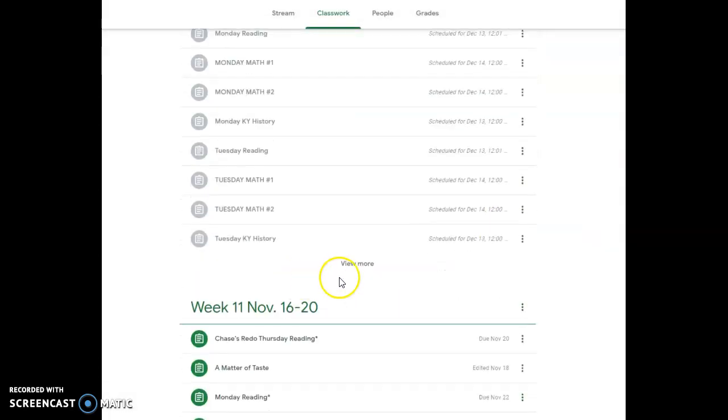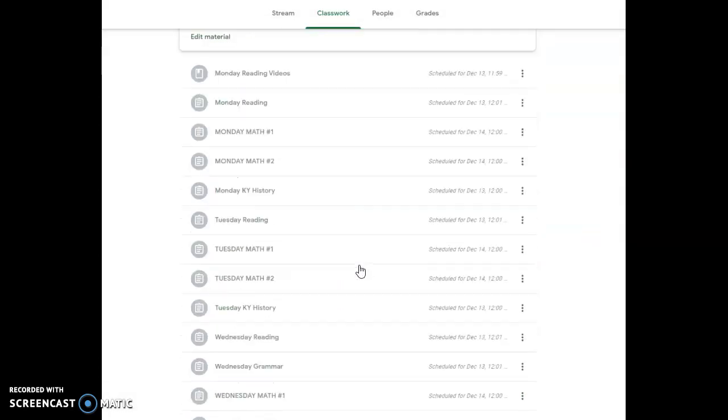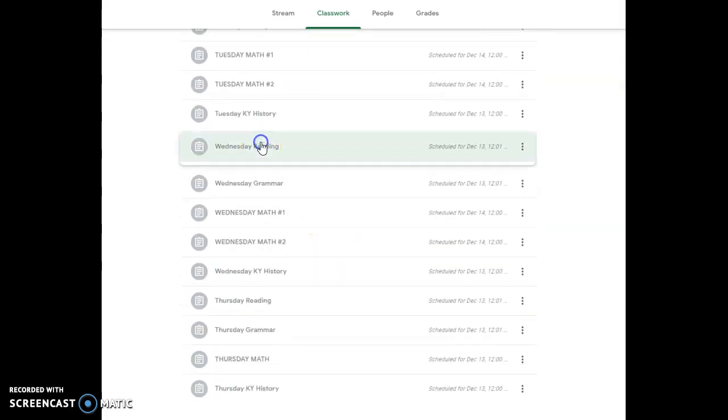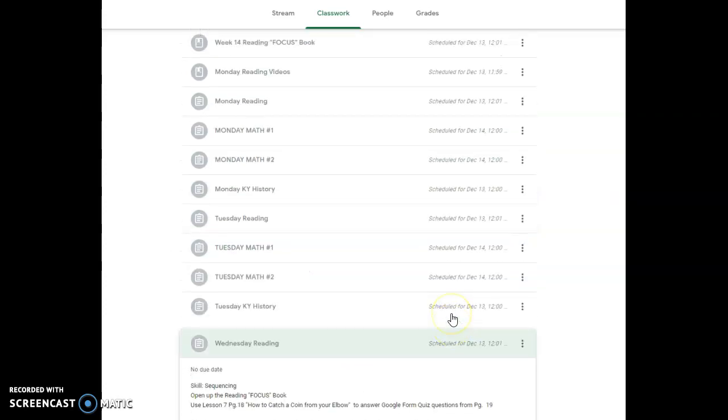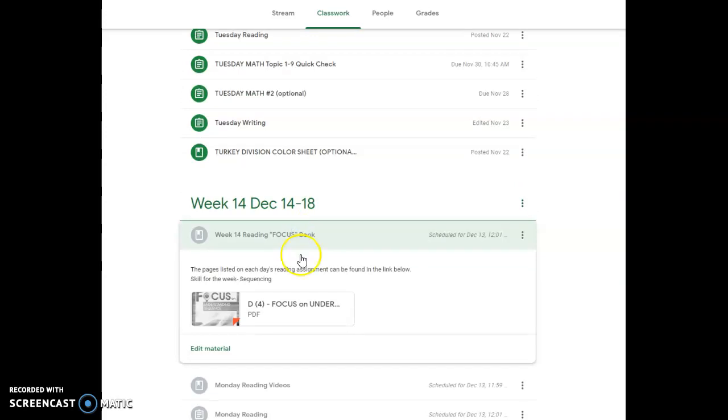All right, when you're done, you're going to go to Wednesday's reading. You're going to fill out the Google form that goes along with our story, how to catch a coin from your elbow. And if you need to go back and look at the story, you click on this and go to pages 18 and 19 or you can bring the video back up.